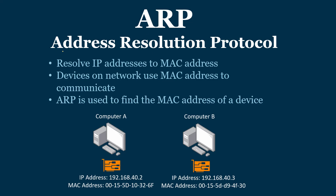ARP stands for Address Resolution Protocol, and this protocol is used to resolve IP addresses to MAC addresses. MAC addresses are important because that is how devices on a network communicate with each other. So if computer A wanted to talk to computer B, it'll need to know computer B's MAC address. Every device on a network is going to have what's called a network interface card.